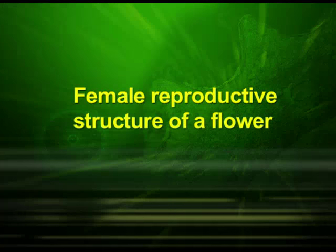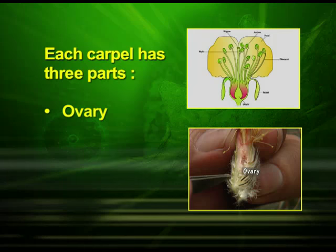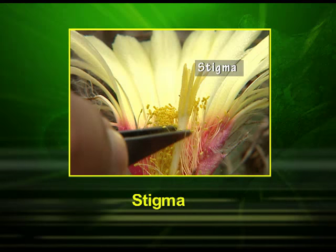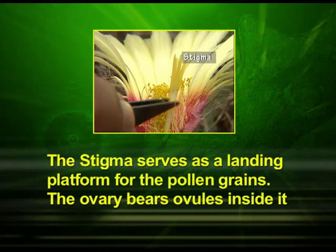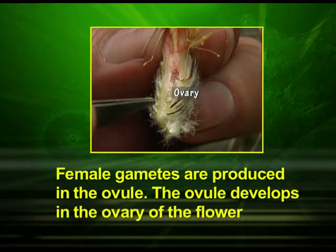The gynoecium or the pistil is the innermost whorl of a flower and is the female reproductive part. The gynoecium is composed of carpels. Each carpel has three parts: ovary, style and stigma. The basal swollen part of the carpel is called the ovary, the long or short middle portion is the style, and the terminal receptive structure is the stigma. The stigma serves as a landing platform for the pollen grains. The ovary bears ovules inside it. Female gametes are produced in the ovule, which develops in the ovary of the flower.